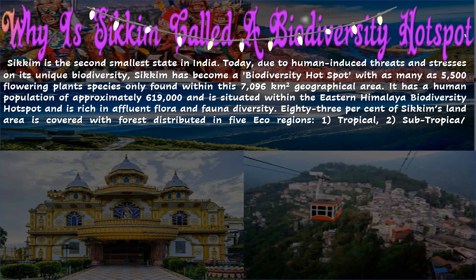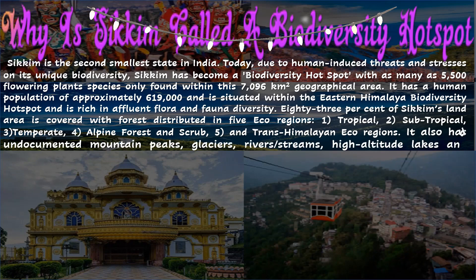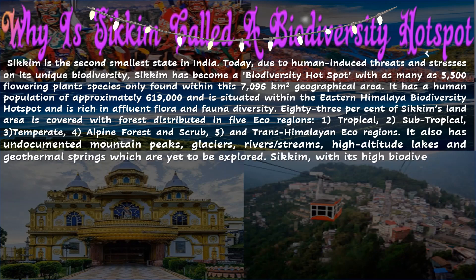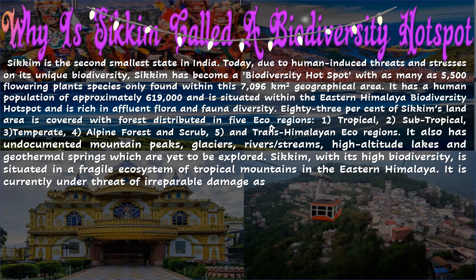83% of Sikkim's land area is covered with forests distributed in five ecoregions: first, tropical; second, subtropical; third, temperate; fourth, alpine forest and scrub; and fifth, trans-Himalayan ecoregions. It also has undocumented mountain peaks, glaciers, rivers, streams, high-altitude lakes, and geothermal springs which are yet to be explored.